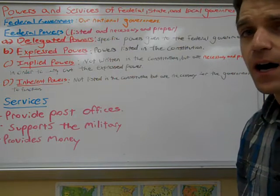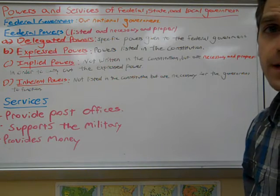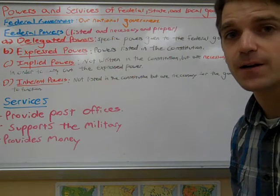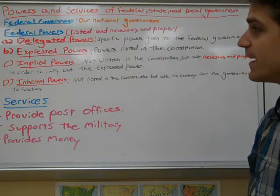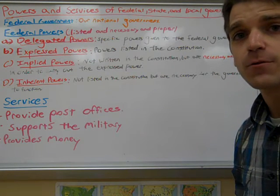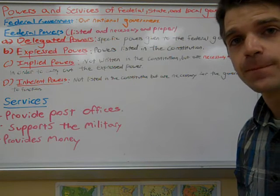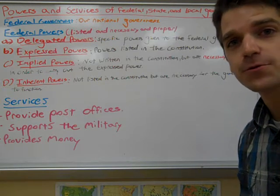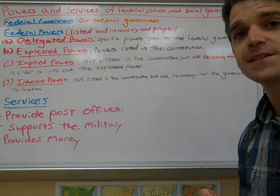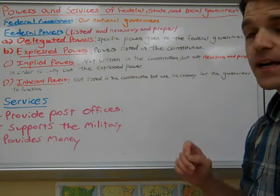The first type is delegated powers — those are specific powers given to the federal government. Within those are express powers, which are powers directly listed in the Constitution. For example, writing federal law, conducting treaties, and supporting the military are all expressed powers directly stated within the Constitution.